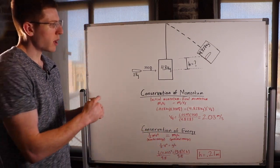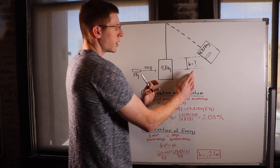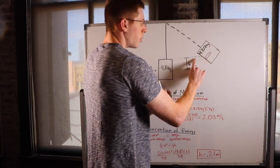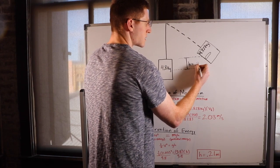So you know that this block, after the bullet lodges into it, is going to swing up to a final height of 0.21 meters before swinging back down.